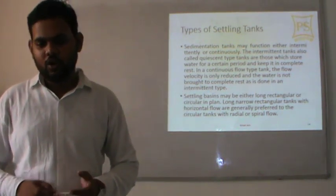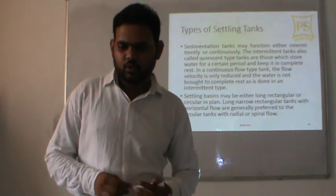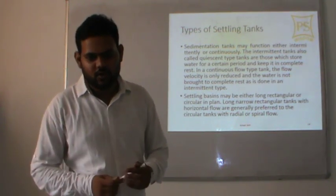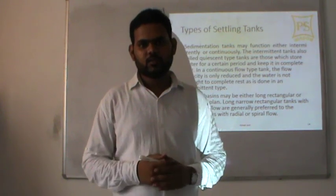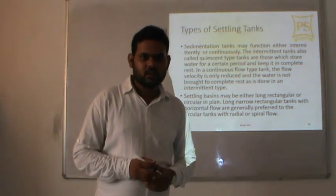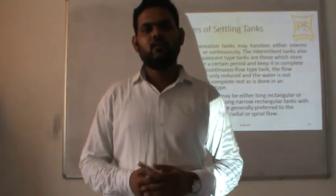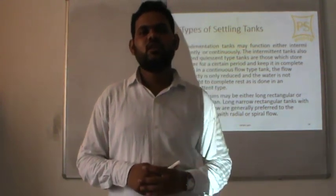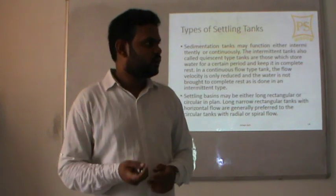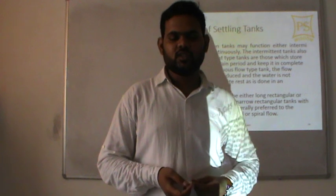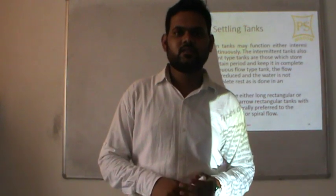Settling vessels may be either long rectangular or circular in plan. Long narrow rectangular tanks with horizontal flow are generally preferred over circular tanks with radial or spiral flow. For today we stop at this point. In the next classes we will discuss the design of long rectangular settling tanks and circular settling or sedimentation tanks, and then after that, flocculation, coagulation, filtration, and disinfection — all of our water treatment plant topics are remaining.